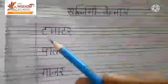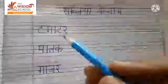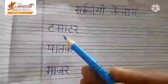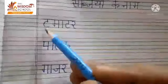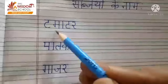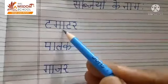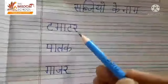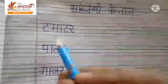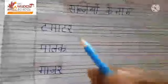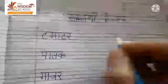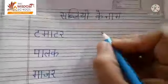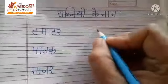First is our sabji — it means vegetable. First vegetable is tamatar — tomato. Now you will write it in this part. Write it two times.